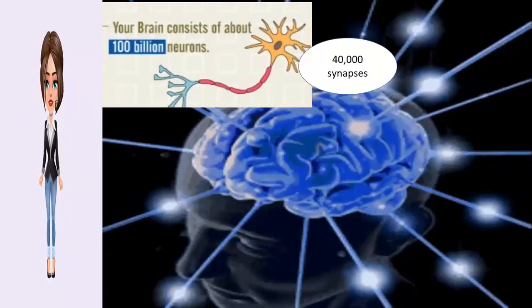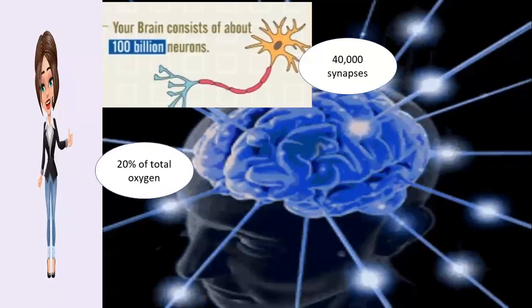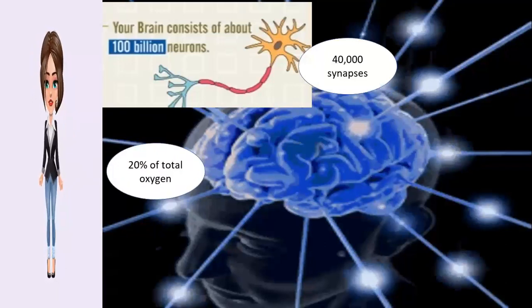Information in your brain travels up to about 268 miles per hour. The brain uses 20% of the total oxygen in your body.